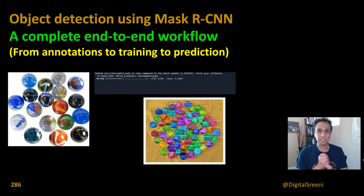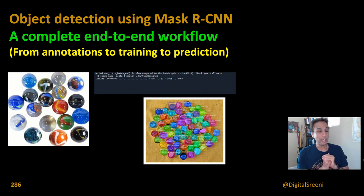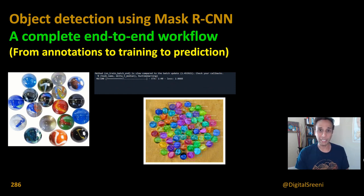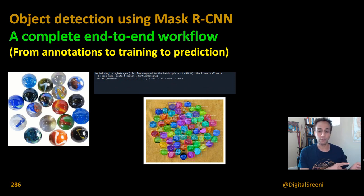Hi everyone, welcome back. In this video, I'm going to show you how you can put together an end-to-end project for object detection using Mask RCNN. We are going to go all the way from actual images to predictions. You can Google search for certain images and download them. I'm going to show you how to annotate and get the annotation files ready, focusing on JSON files because I've already talked about XML files in the last video.